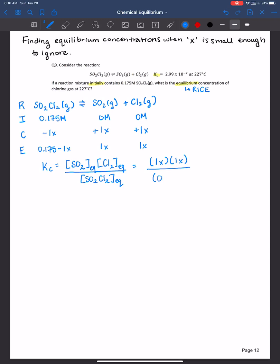And this is 0.175 minus 1x. And so as you can imagine, and hopefully you can start to see here that in the end, my goal is to always solve for x, right? Because once I know x, I can figure out my equilibrium concentrations.